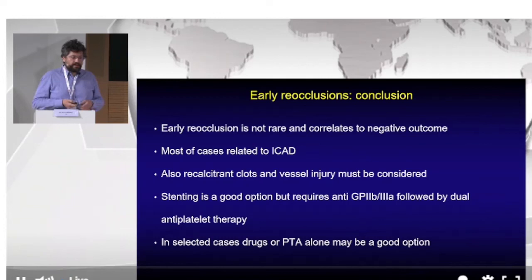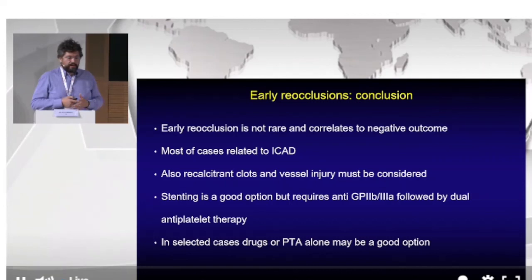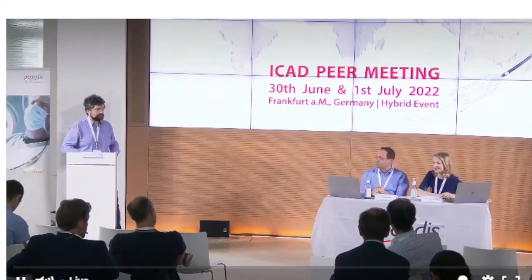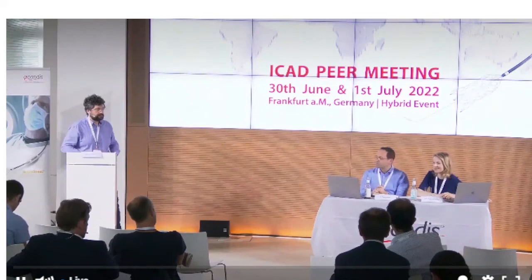To conclude: early reocclusions are not rare and correlate with negative outcome. In most cases they are related to ICAD, but recalcitrant clots or vessel injury can also be the reason. The main option is probably stenting, but it requires anti-platelet inhibition. In selected cases, PTA or drugs alone may still be an option. Thank you.